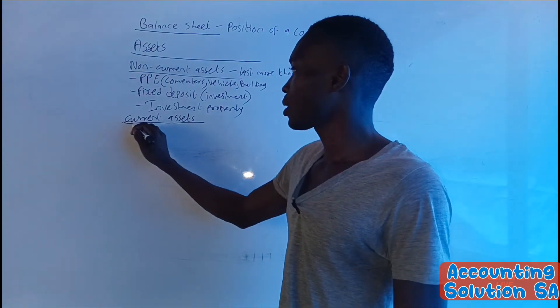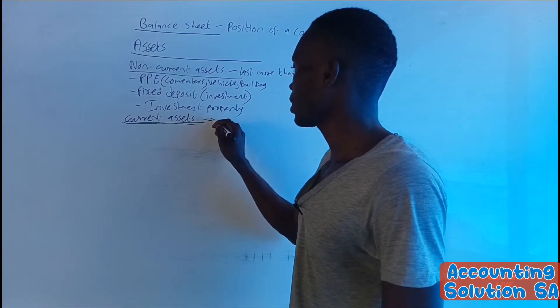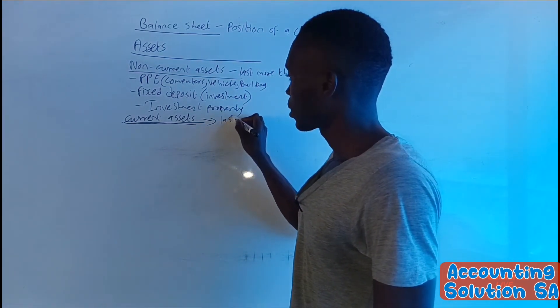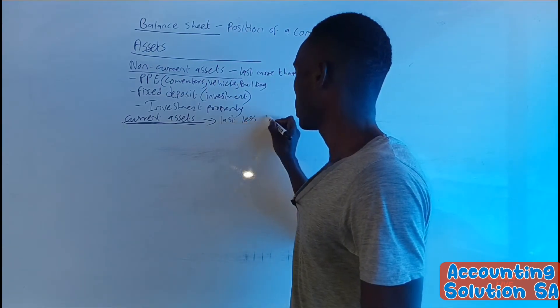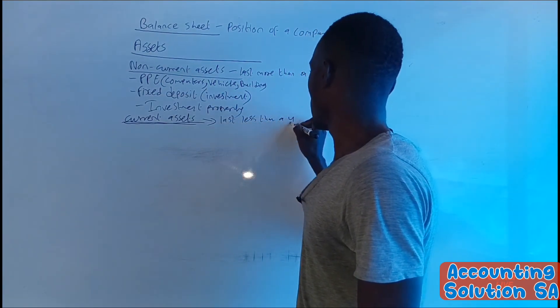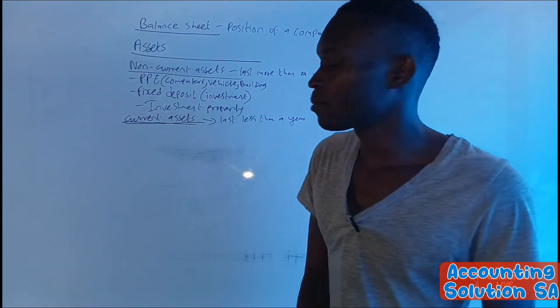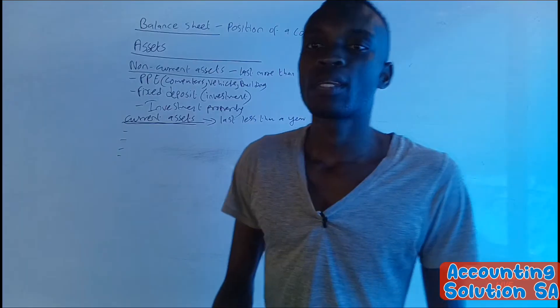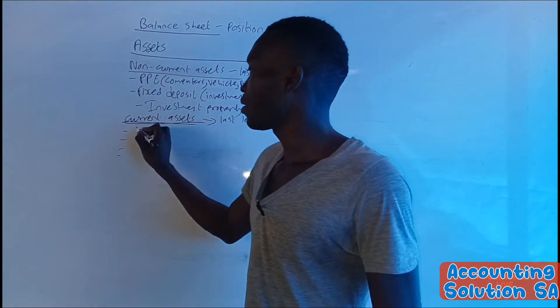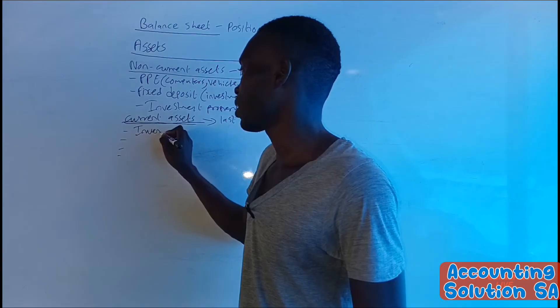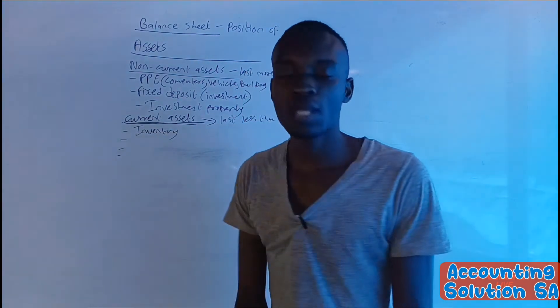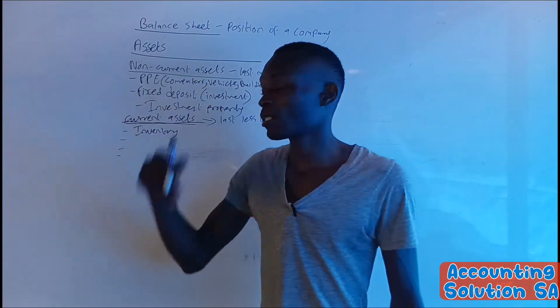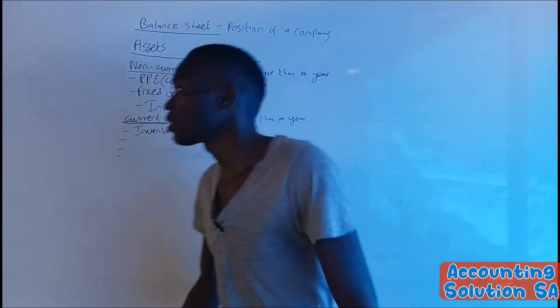Now let's go to current asset. Current asset - we are talking about an asset that lasts less than a year. What does this mean? This asset is going to be used anytime. For example, we have inventory. If we purchase inventory, the purpose is to sell it. We can buy it today and sell it tomorrow, which means that we are not expecting to use it for more than 12 months.